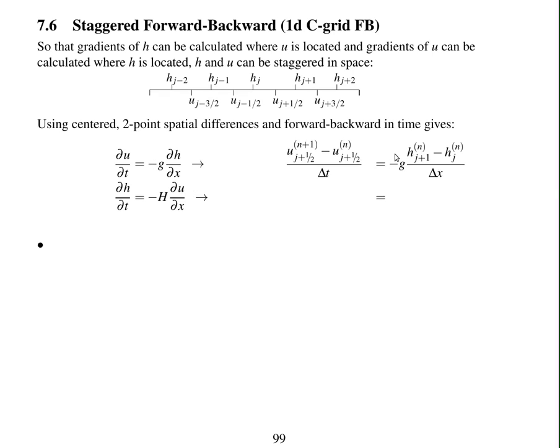And then in space, so u plus 1 half is here, so the gradient in the x direction is just hj plus 1 minus hj. We don't have to miss out a point in between. Now we're just dividing by delta x, not 2 delta x.